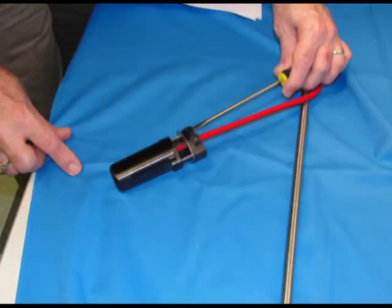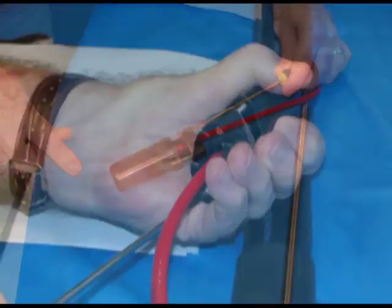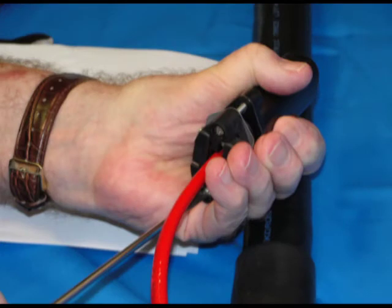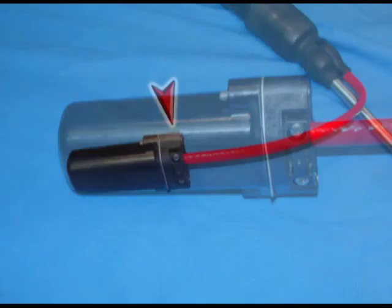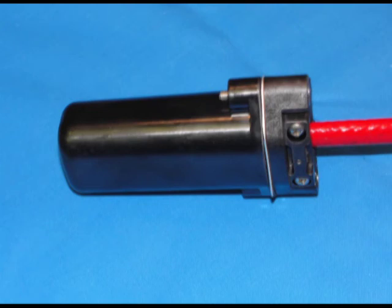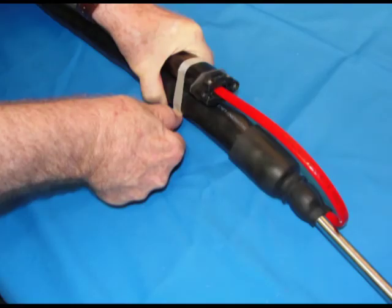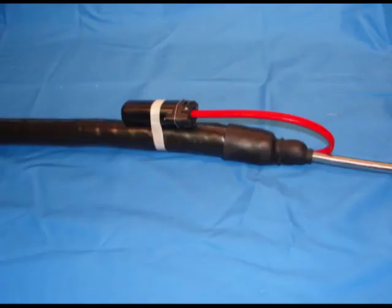Once the cap is installed, also take care to tighten strain relief screws on the side of the base. Utilizing fiberglass tape, fasten the completed end seal back to the tubing bundle as shown.